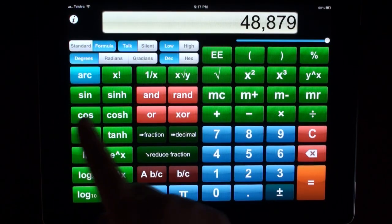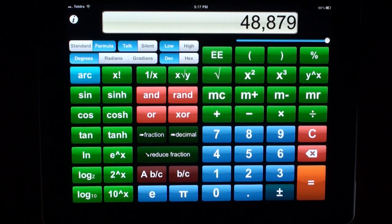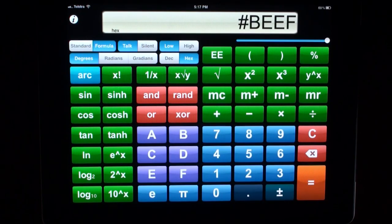You can switch between trigonometric modes, decimal and hexadecimal. Hexadecimal, B, E, E, F. Yummy, yummy!